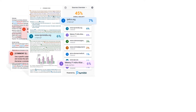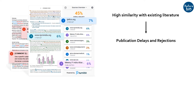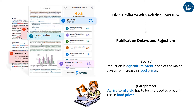Manuscripts with high similarity scores and plagiarism with previously published papers are the major causes of publication delays and rejections. Researchers and students often use paraphrasing as a means to reduce manuscript similarity, but this has to be done with precaution to avoid any kind of trouble.